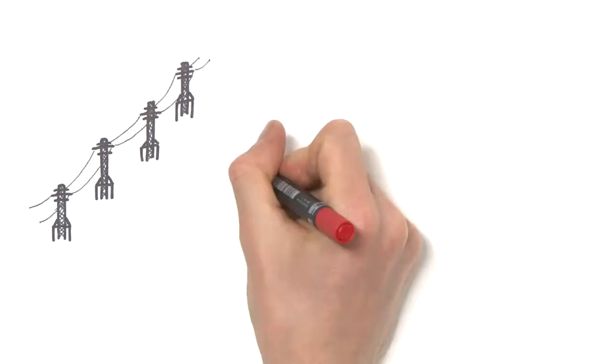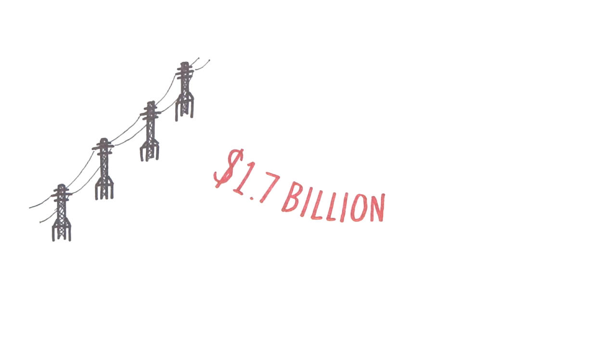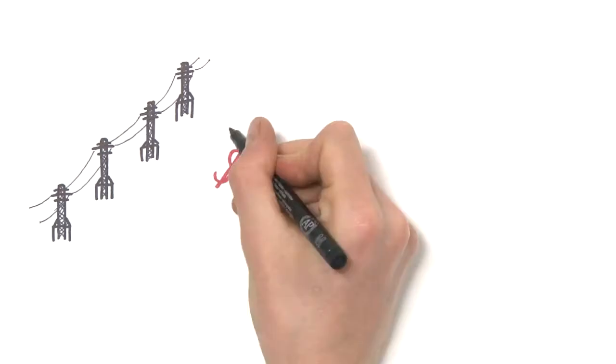You see, under public ownership, everyone in New South Wales benefits. Last year, the government received $1.7 billion in profits to help pay for other public services like our hospitals, schools and transport.